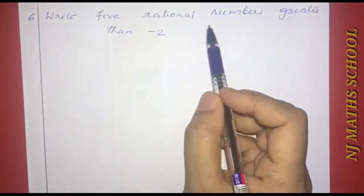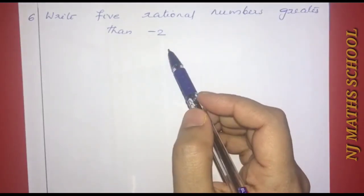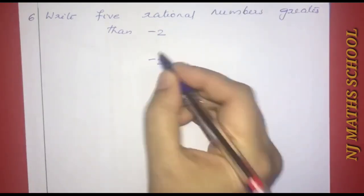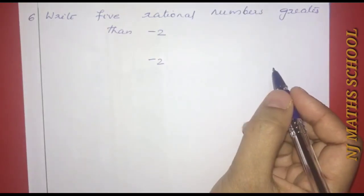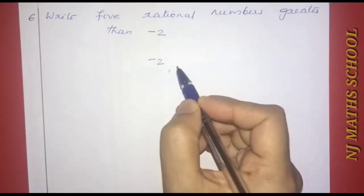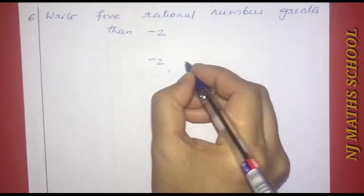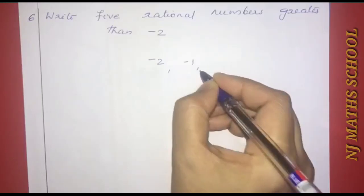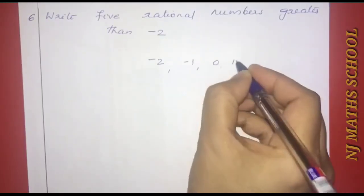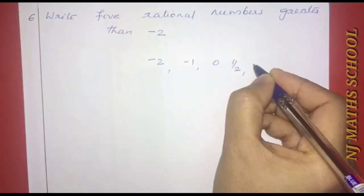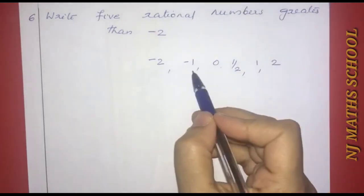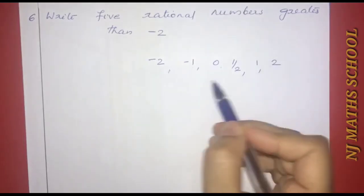Next question: Write 5 rational numbers greater than negative 2. We can list: negative 1, 0, 1 by 2, 1, and 2. Counting: 1, 2, 3, 4, and 5 — that gives us 5 rational numbers greater than negative 2.